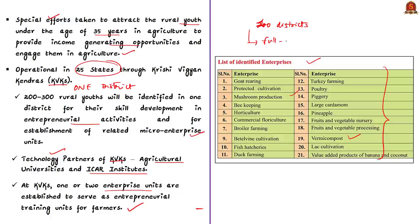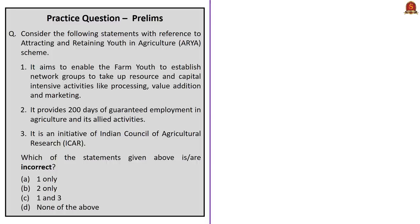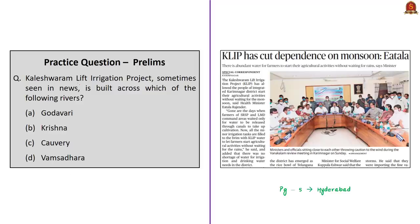In order to tackle the massive reverse migration from urban areas to villages, there is a need for full-fledged implementation of the ARYA scheme. Now let's take up the given question: 'Consider the following statements with reference to the ARYA scheme.' Three statements are given; the first and third statements are correct, while the second statement is incorrect as no such guarantee is provided in the scheme. The correct answer for this question is option B, 'two only.' The next question: 'Kaleshwaram Lift Irrigation Project, sometimes seen in news, is built across which of the following rivers?' — the correct answer is option A, Godavari.